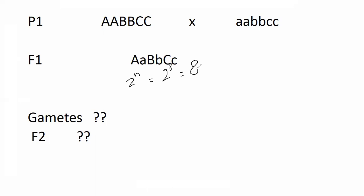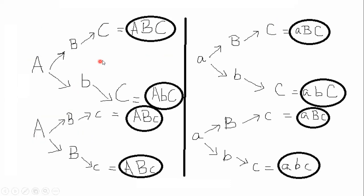Eight gametes are formed by a single individual of F1 generation. Now we have to calculate not just the number but the types of gametes formed by the F1 individual. There is another pictorial diagram representing the different types of gametes formed by the F1 individual.